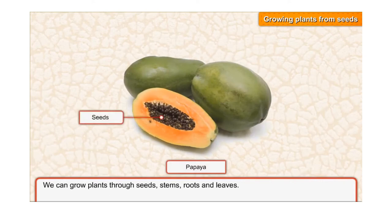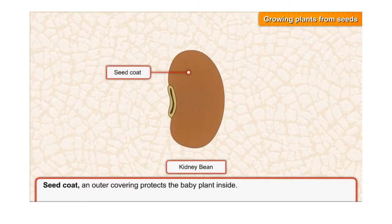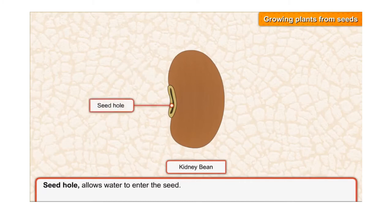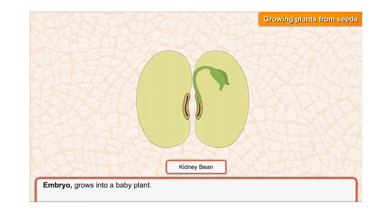Seeds are present inside fruits, and new plants grow from seeds. Let us study the structure of a kidney bean seed. The seed coat is an outer covering that protects the baby plant inside. The seed hole allows water to enter the seed. Cotyledons store food for the baby plant. The embryo grows into a baby plant.